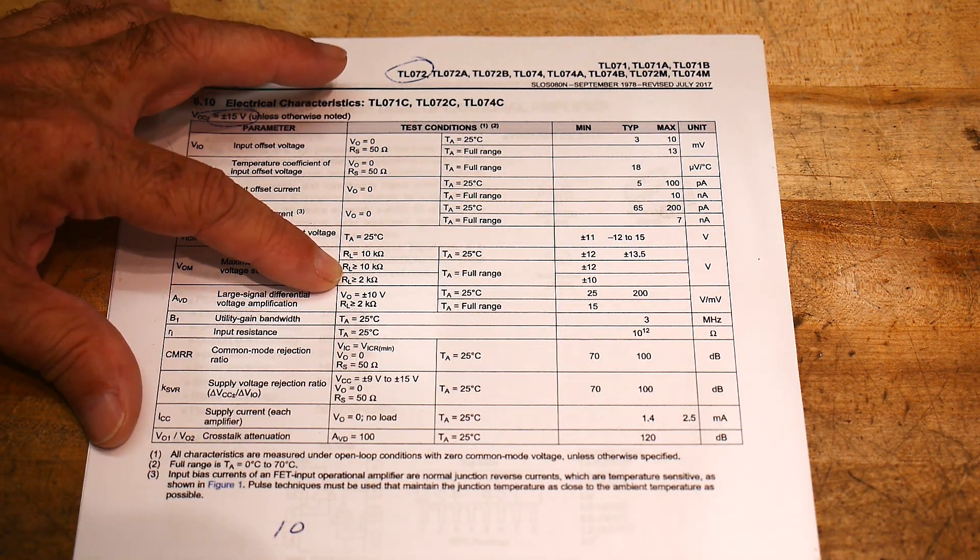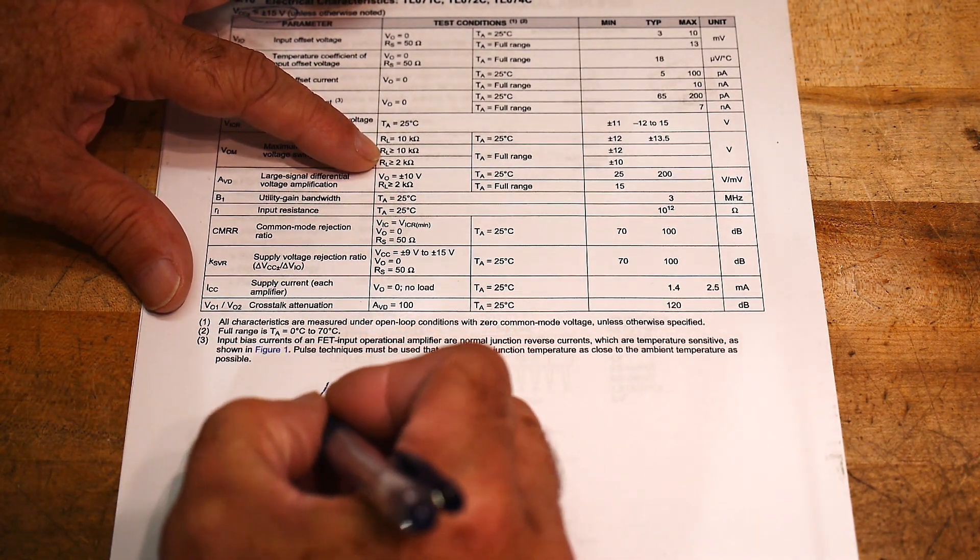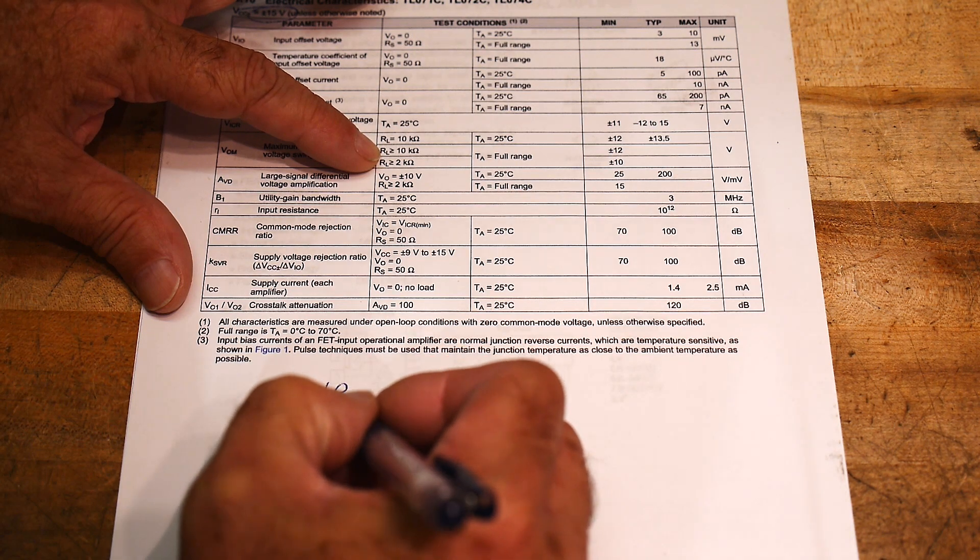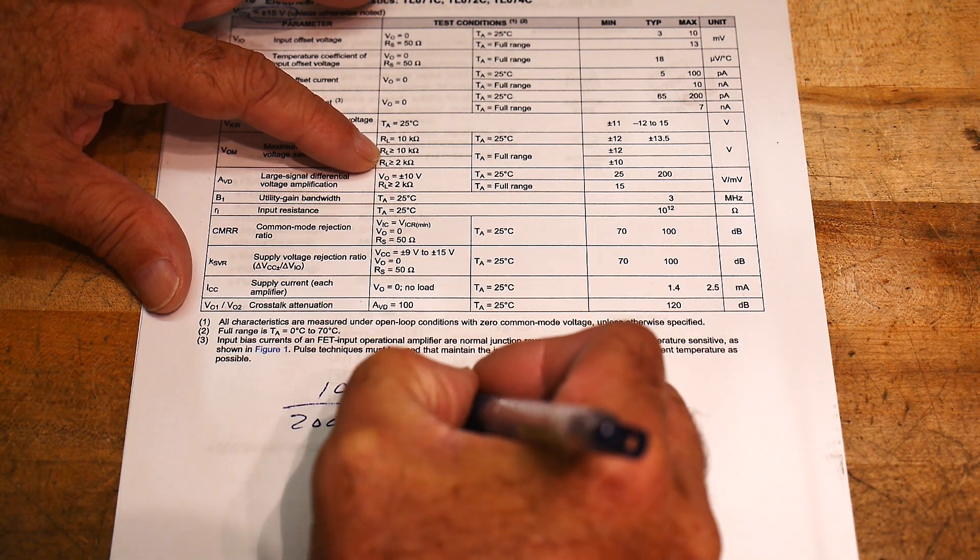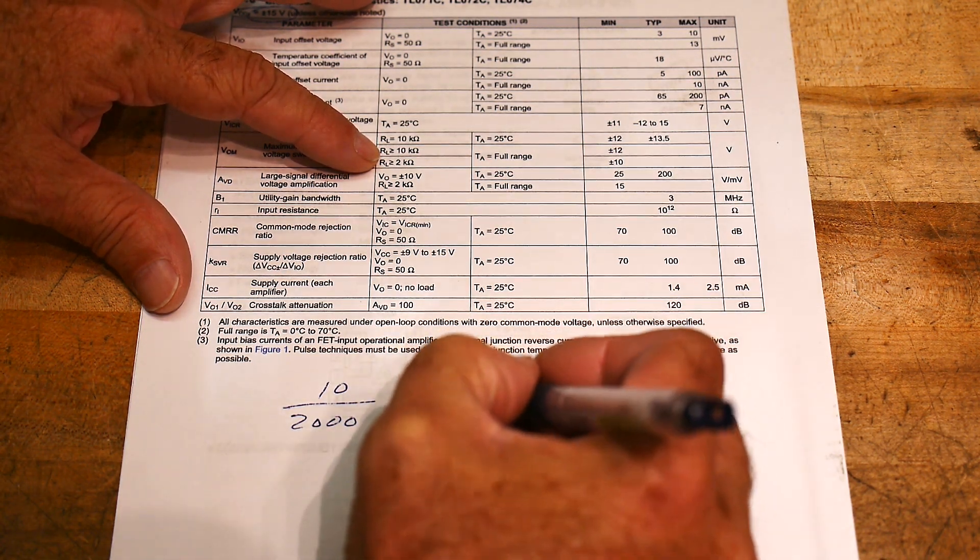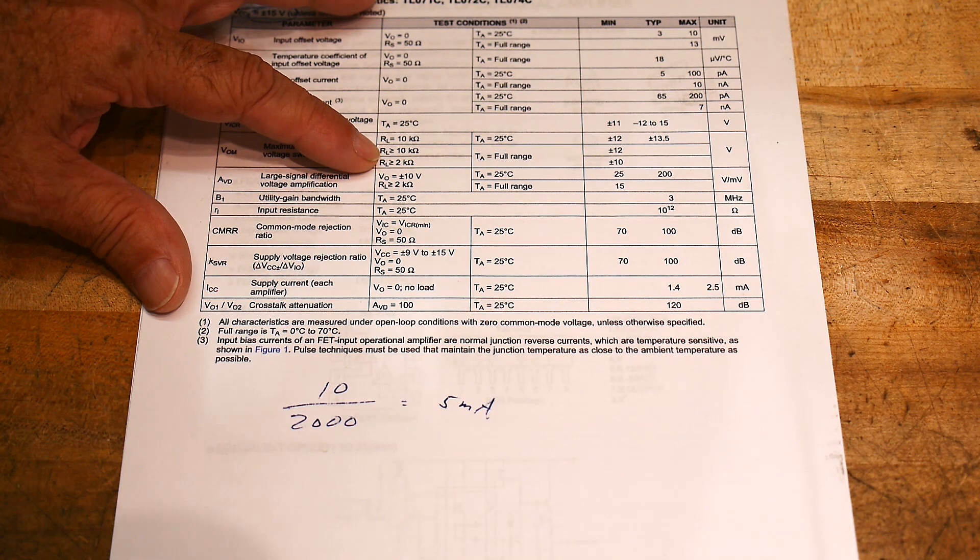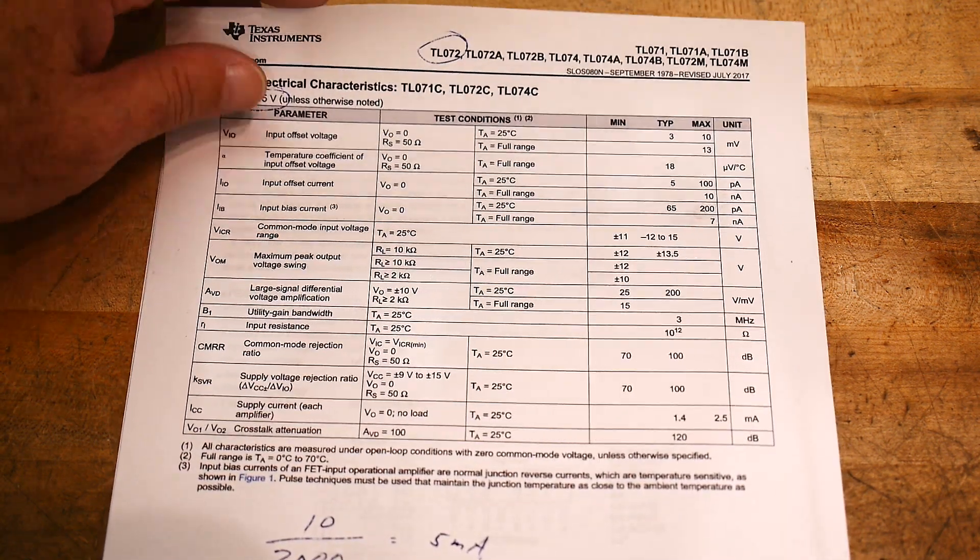So if we have 10 volts and 2k, then we're going to get 5 milliamps. So it only drives 5 milliamps. So not much at all. So that's the TL072.